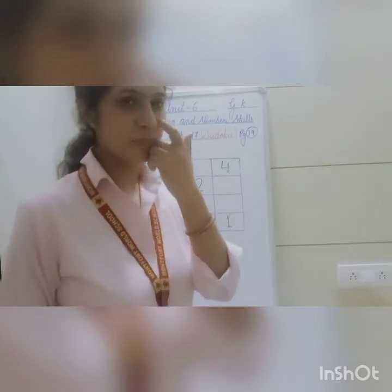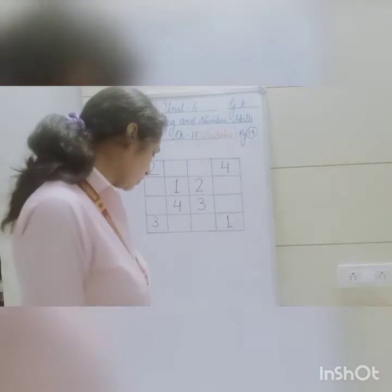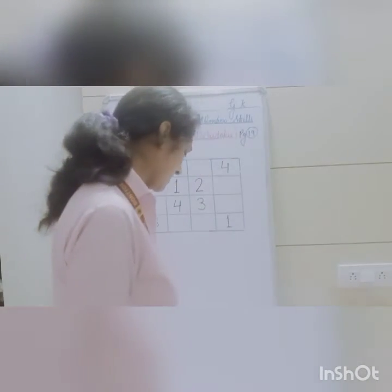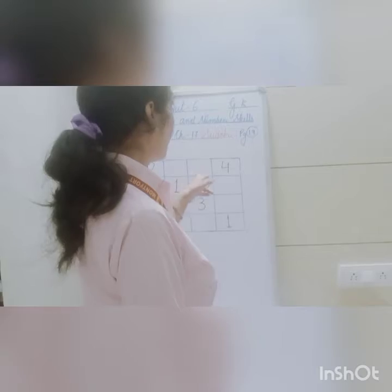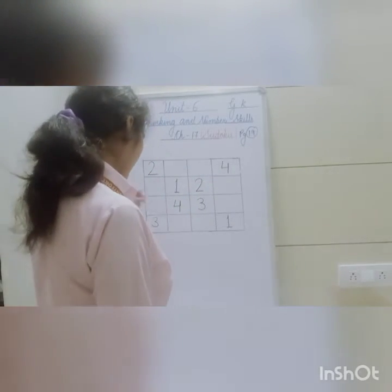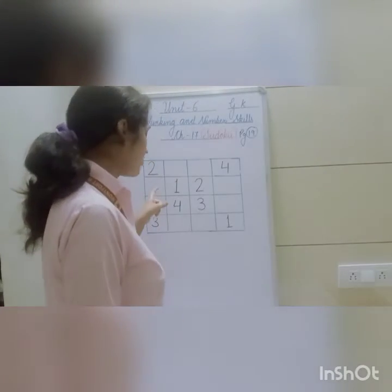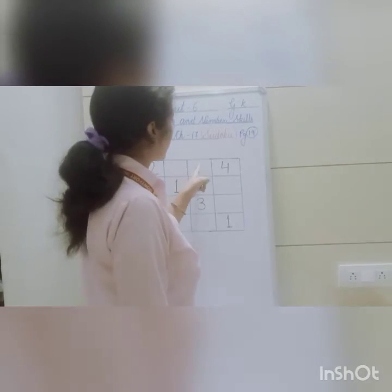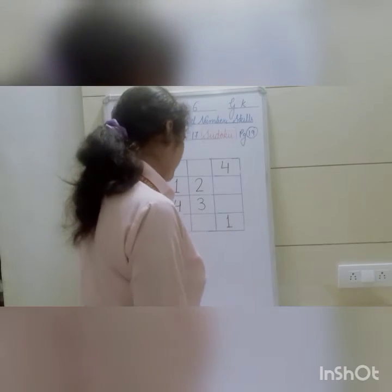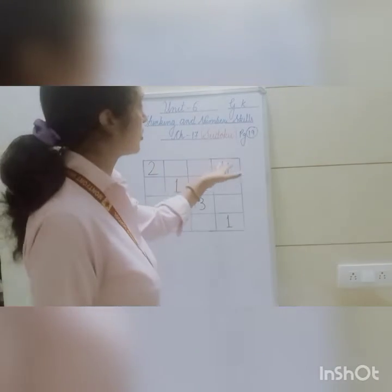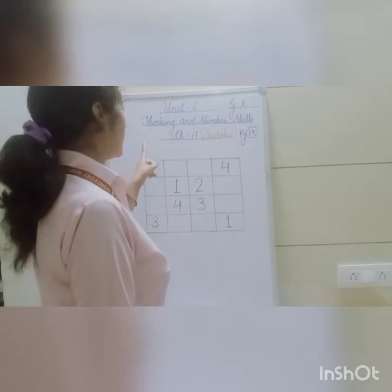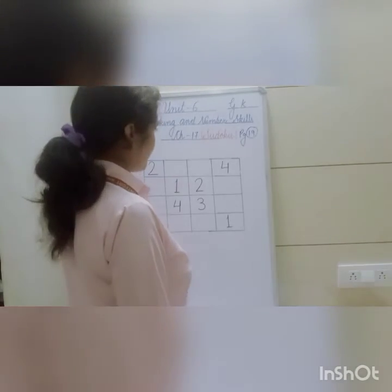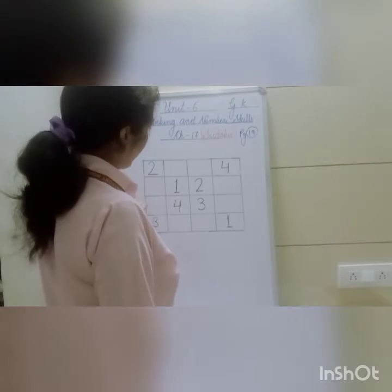Sudoku is a kind of puzzle. The word Sudoku is the shortened form of a Japanese sentence which means the number must occur only once. In a row and column, one number will occur only once. You have to fill in the blank squares with numbers from 1 to 4, such that each number appears only once in each row and each column.